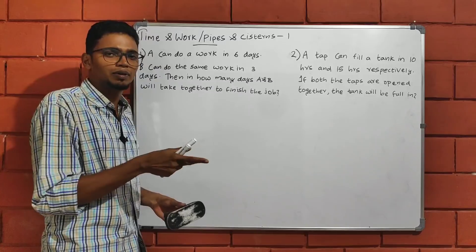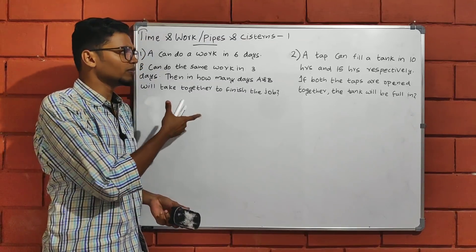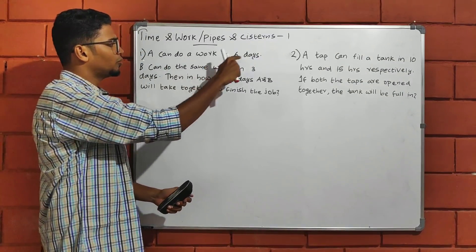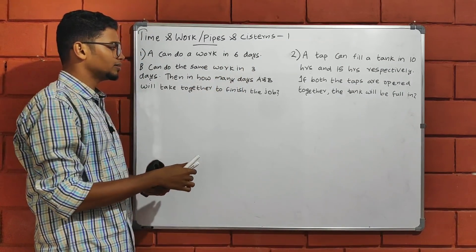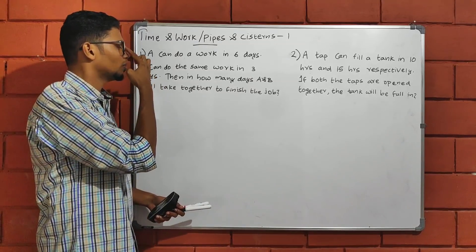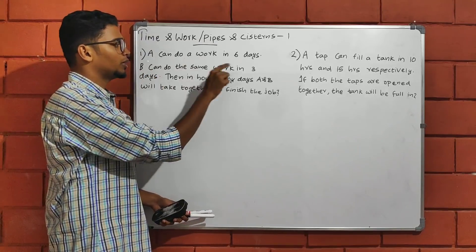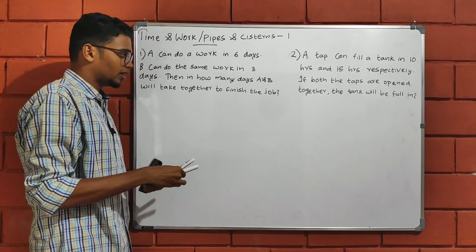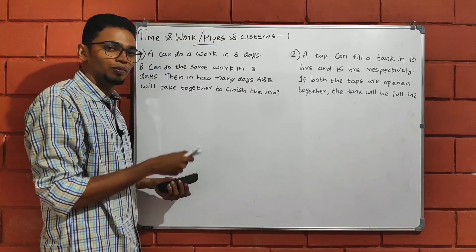We will discuss the basic concepts in this class. The topic is: A can do a work in 6 days, B can do the same work in 3 days. In how many days will A and B together finish the job?